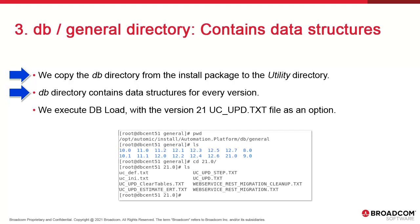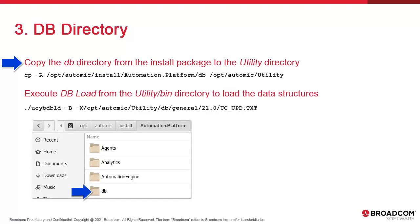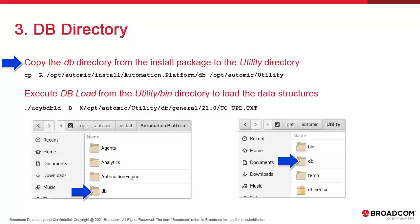The db directory contains a subdirectory called general, which stores data for every version of Atomic. We'll be using version 21. In this 21 directory, we find a number of files. uc_upd.txt is of particular interest to us — we use this file as an option when we execute dbload. First, we copy the db directory from the installation package to the utility directory. Next, we execute the dbload utility. The dash b option executes the utility in batch mode, and dash x points to the uc_upd.txt file.